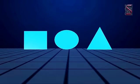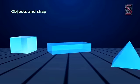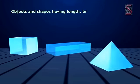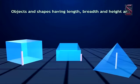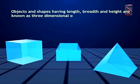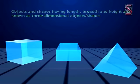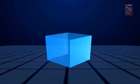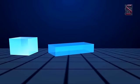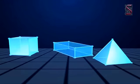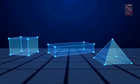Objects and shapes having length, breadth, and height are known as three-dimensional objects and shapes. Some of the three-dimensional objects are cuboid, cube, cone, cylinder, sphere, etc.